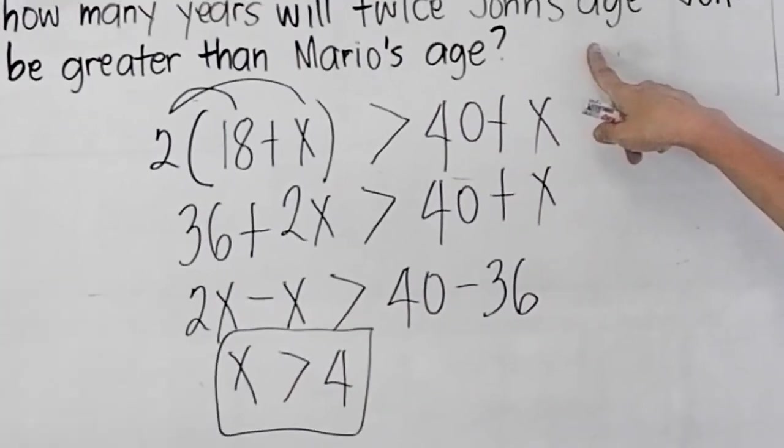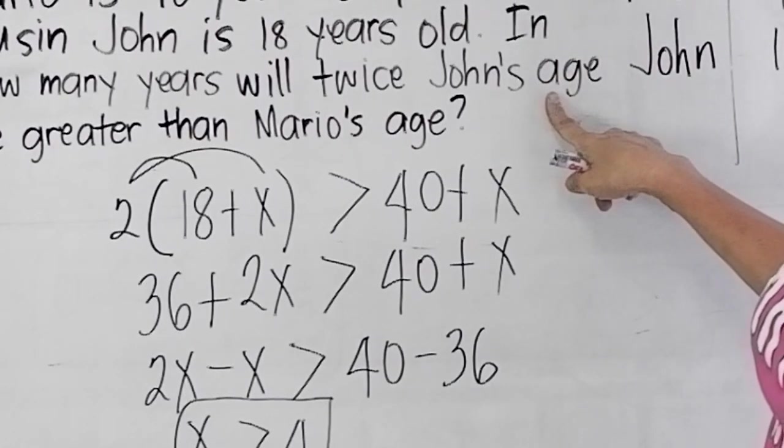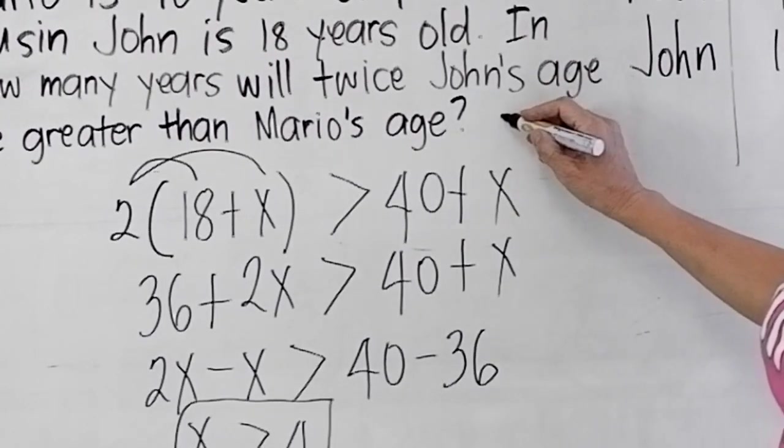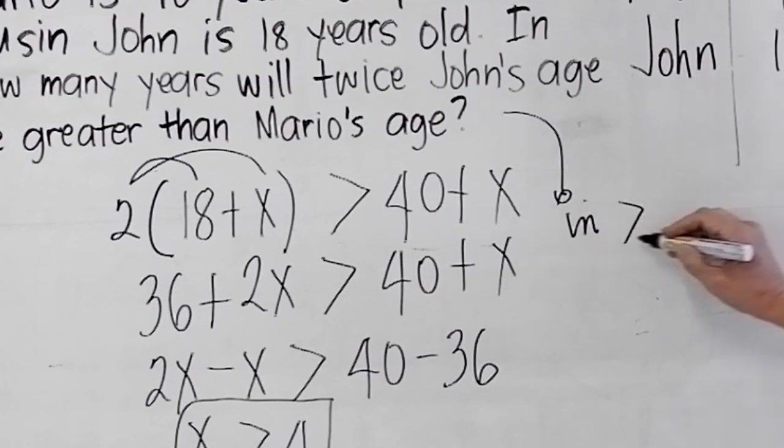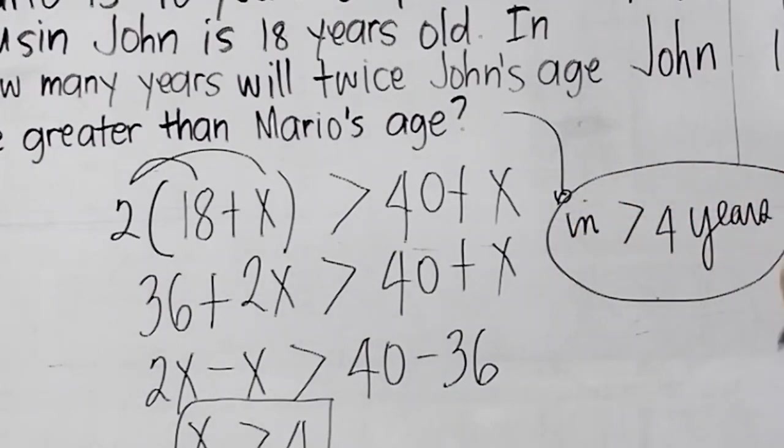To answer the question, in how many years will twice John's age be greater than Mario's age? The answer is in greater than or in more than 4 years.